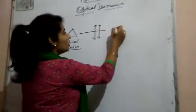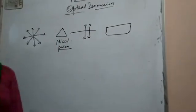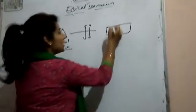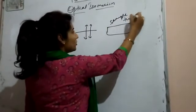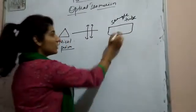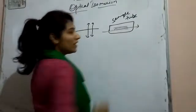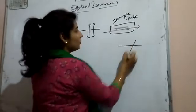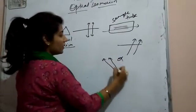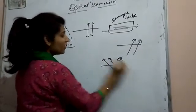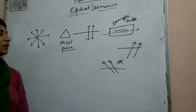If we pass the polarized light through an optical isomer sample, and if the light rotates clockwise or anti-clockwise, this means that it will be Optical Isomerism — the compound is optically active.